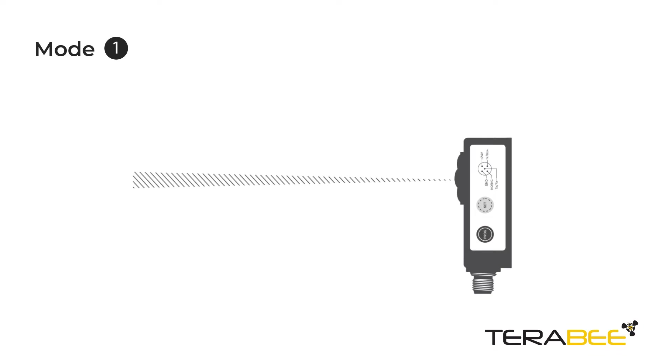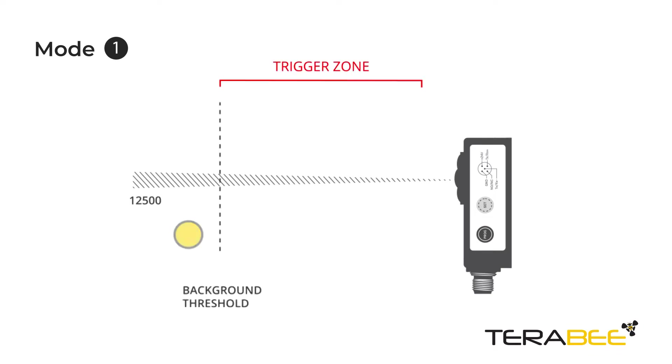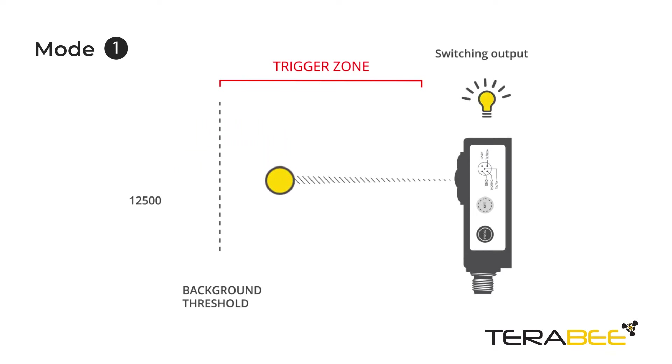In mode 1, a distance threshold is taught in. As soon as an object or a person enters the set threshold area, a switching output is activated.